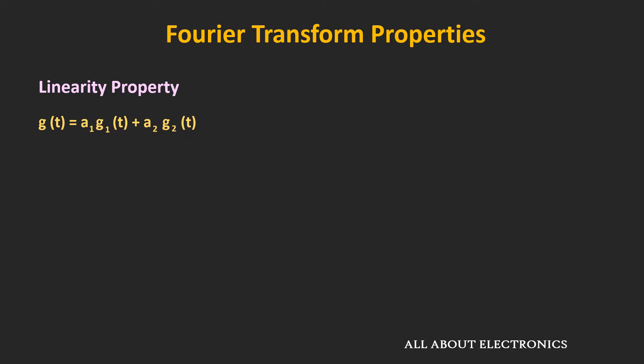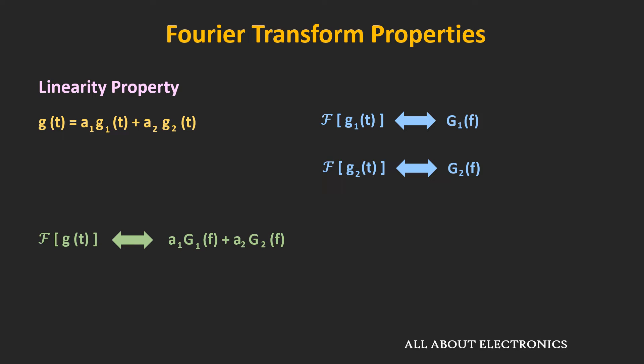The next property is the linearity property. If signal g can be expressed as a linear combination of g₁ and g₂, and the Fourier transforms of g₁ and g₂ are G₁ and G₂ respectively, then the Fourier transform of g can be expressed as the same linear combination of G₁ and G₂. That is the basic linearity property of the Fourier transform.